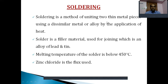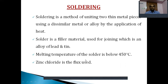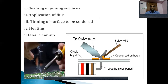The metals you are joining should have very low thickness — thin metal pieces. This process is possible only when the temperature is less than 450 degrees Celsius. For materials whose melting temperature is less than 450 degrees Celsius, we prefer the soldering method. In addition, we also use a chemical known as zinc chloride, which is a flux.